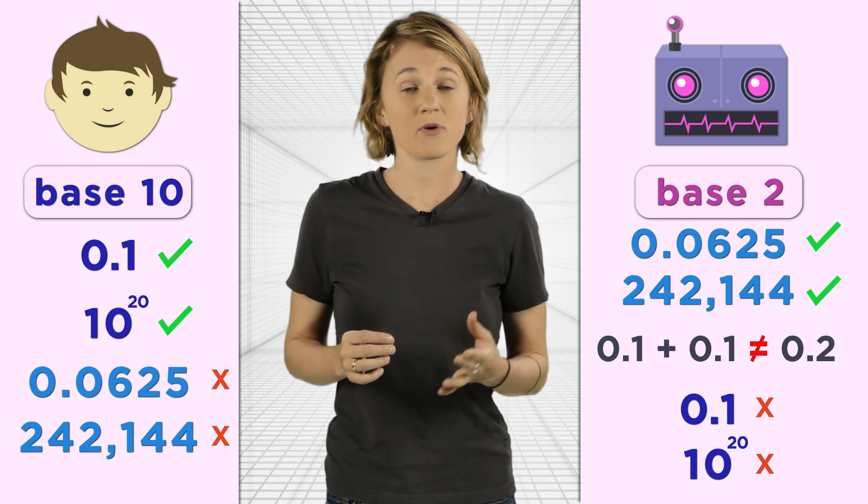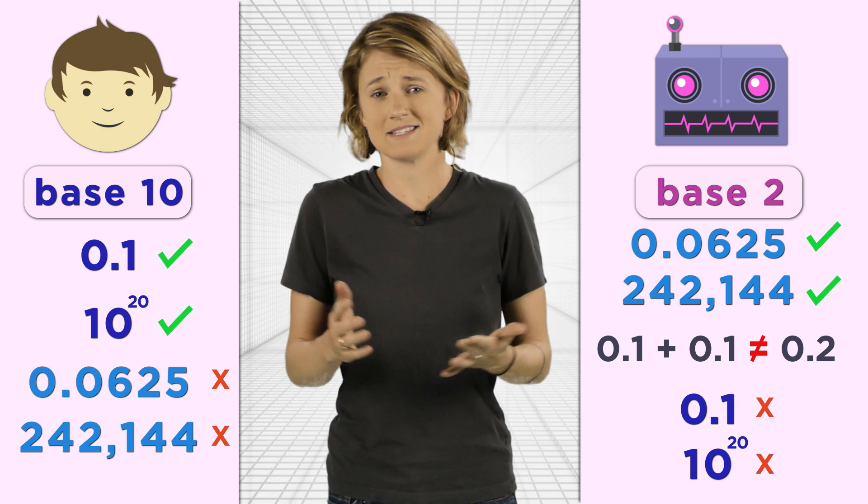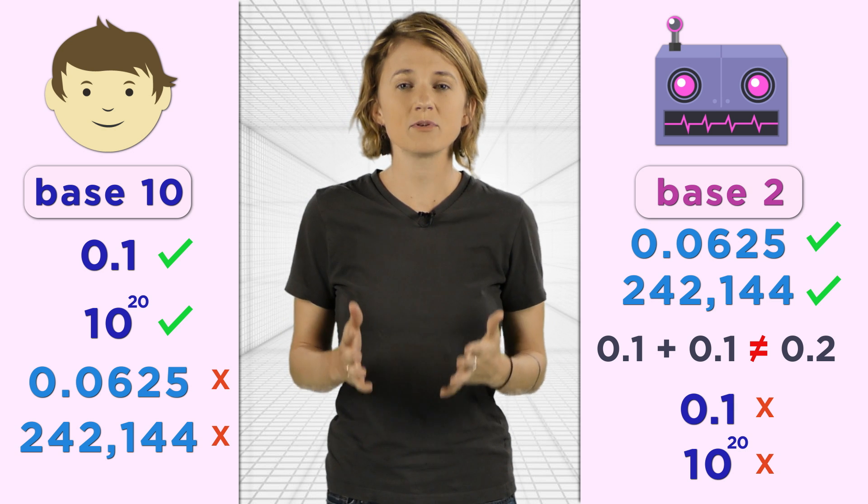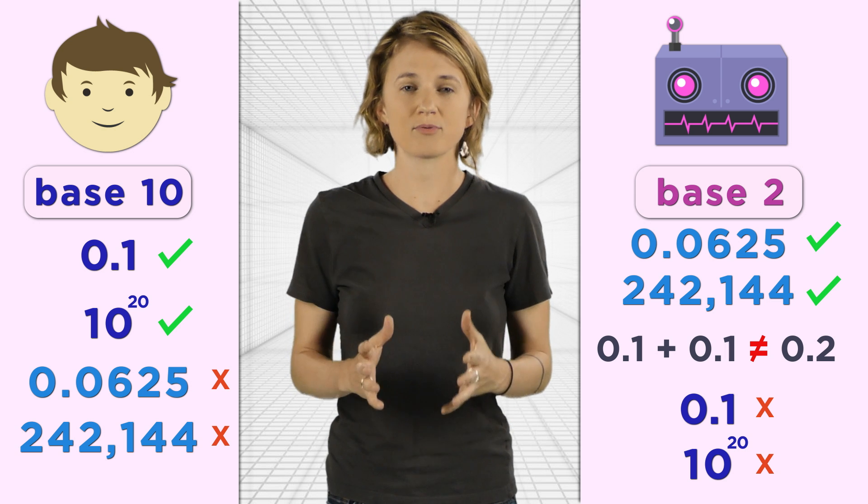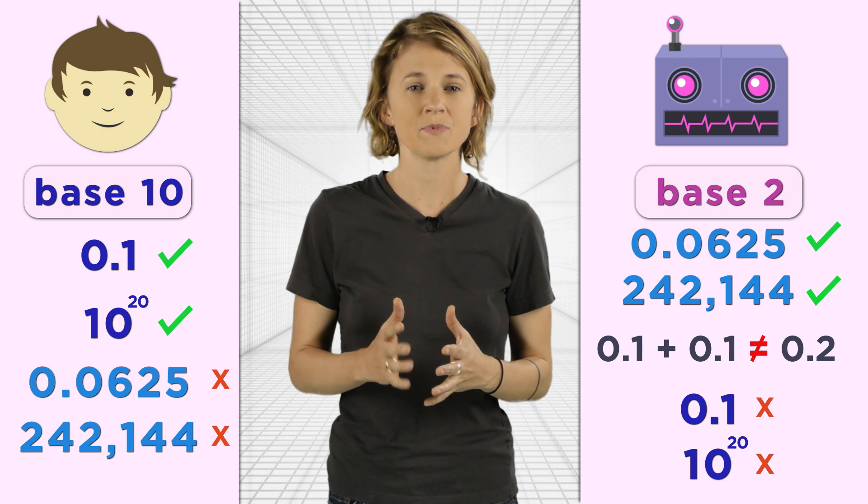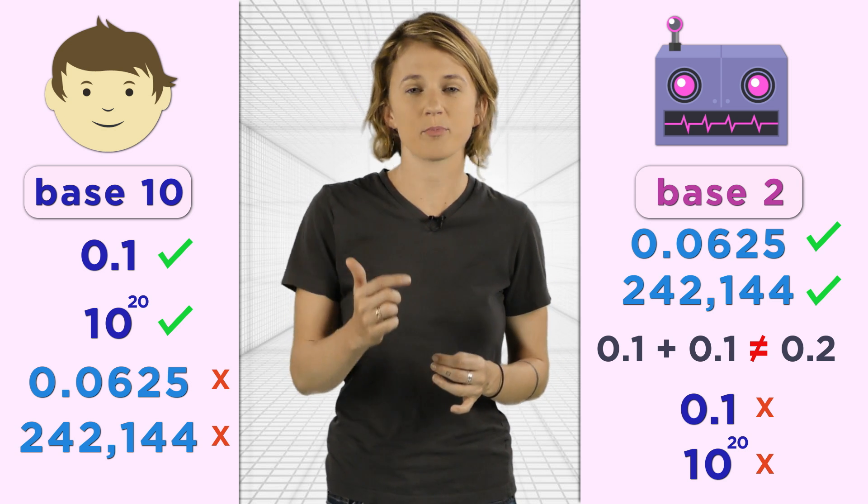Like that 0.1 plus 0.1 does not produce 0.2. The number 0.1 is not representable. It's simply not present on the computer number line. So it's replaced by a rounded approximation.